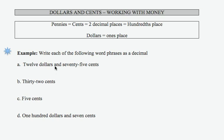If we want to write the word phrases as a decimal, twelve dollars and seventy-five cents - the 'and' is where the decimal point goes - so that would be $12.75. And just to be technically correct, let's go ahead and put a dollar sign here.